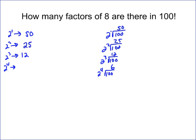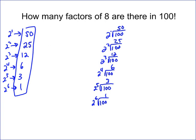Continuing: 2 to the fifth is 32, and 32 goes into 100 three times (32×3=96). Then 2 to the sixth is 64, and there is just 1 sixty-four inside 100. We stop there because 2 to the seventh is 128, which exceeds 100. The total number of 2's is 50+25+12+6+3+1, which equals 97.